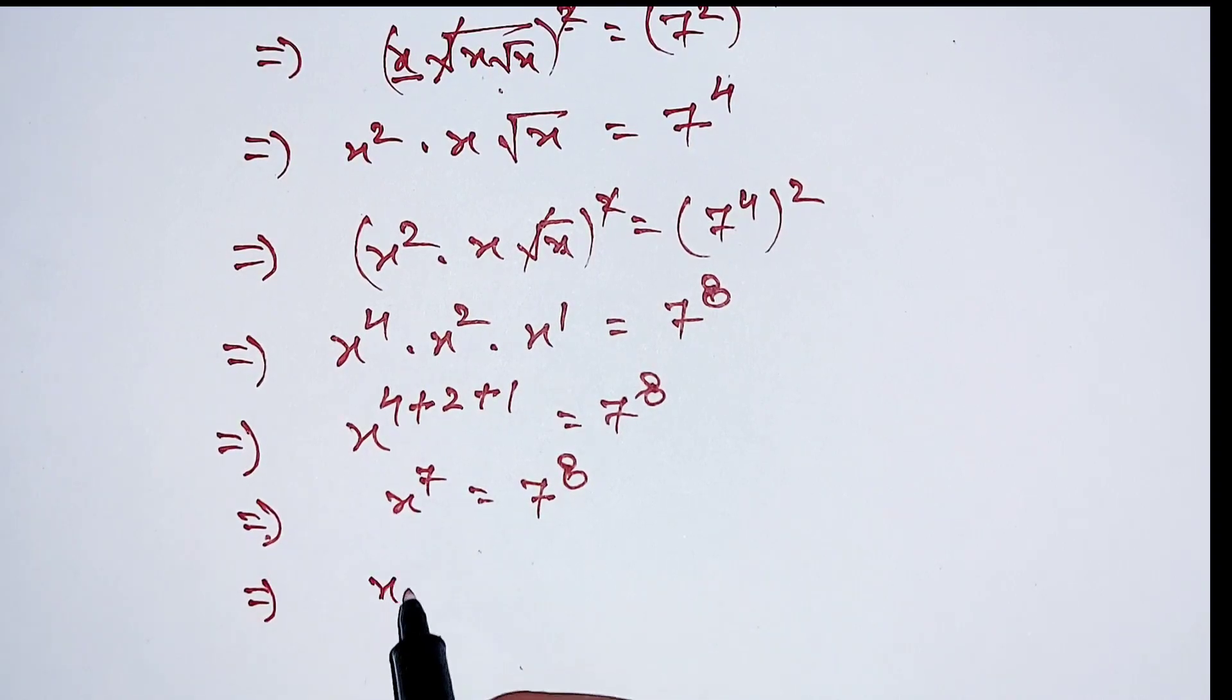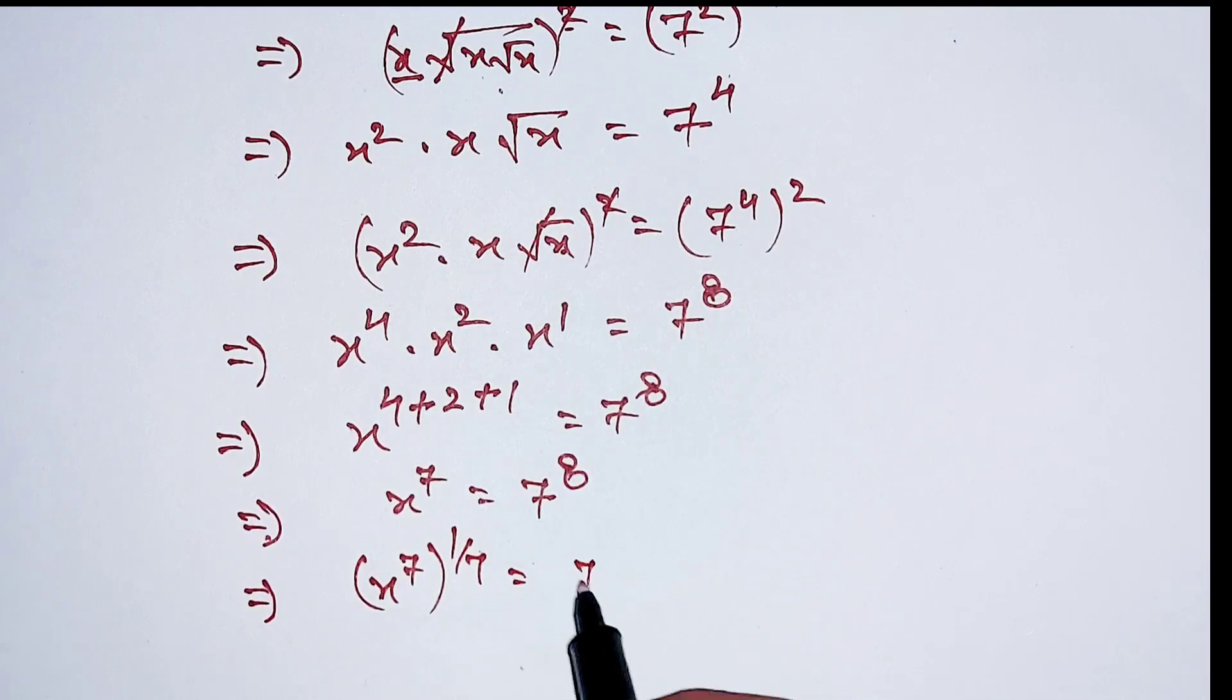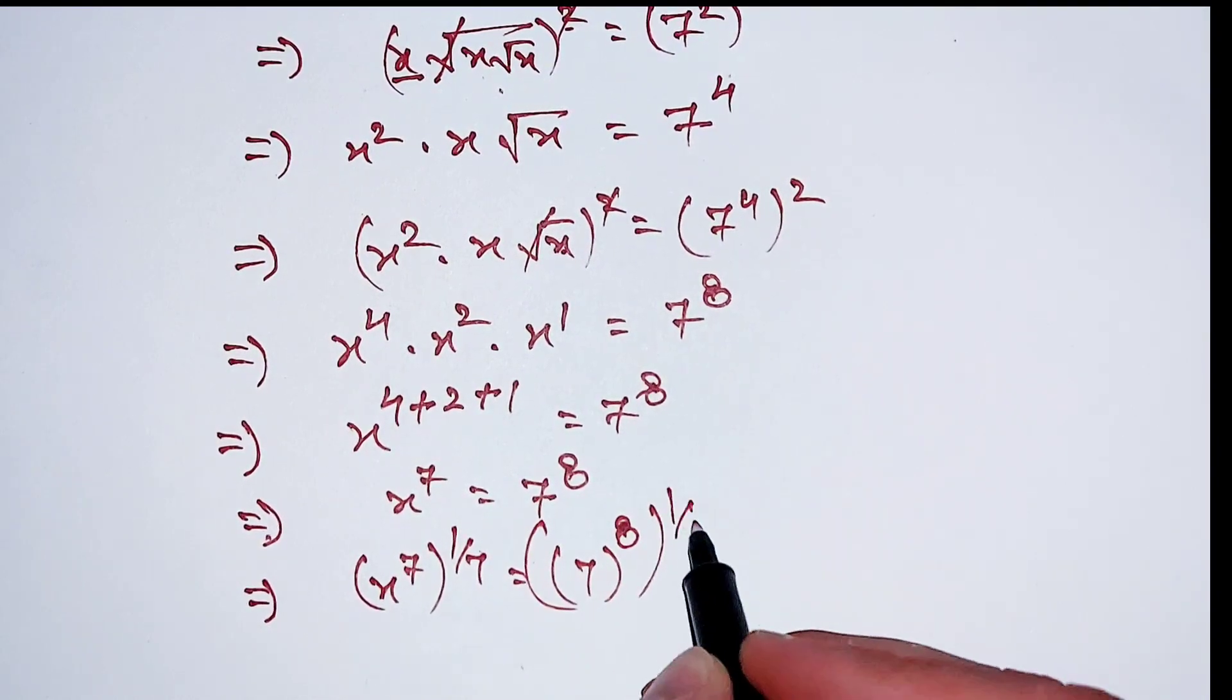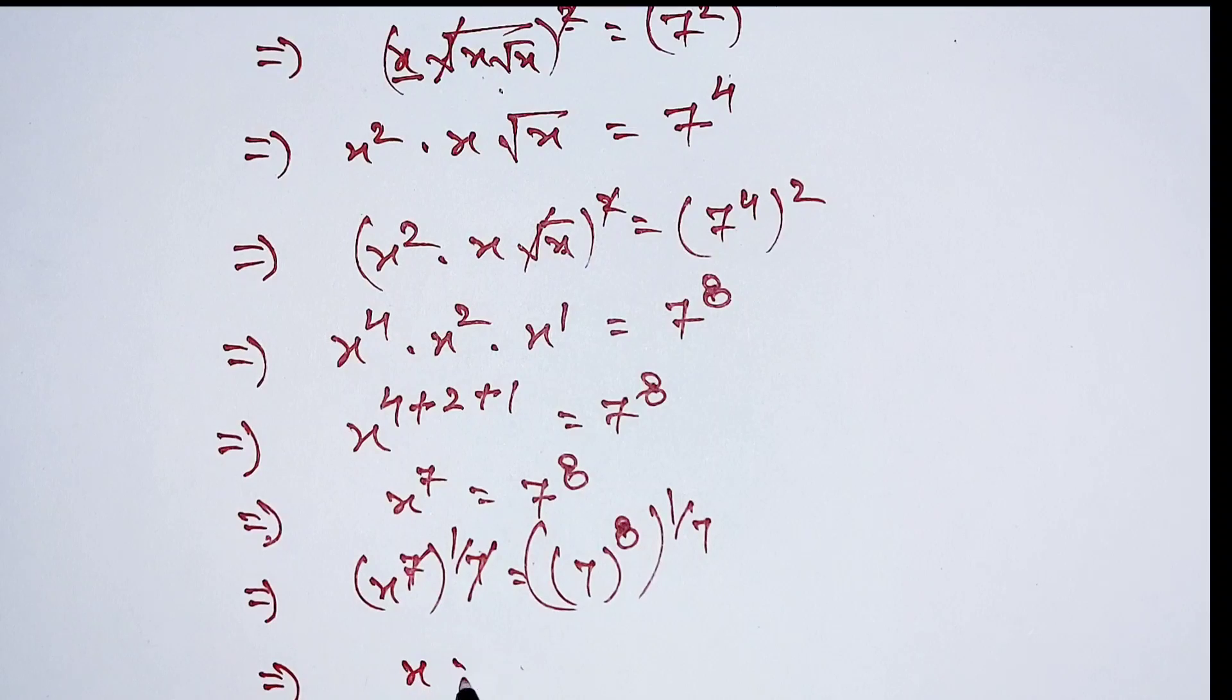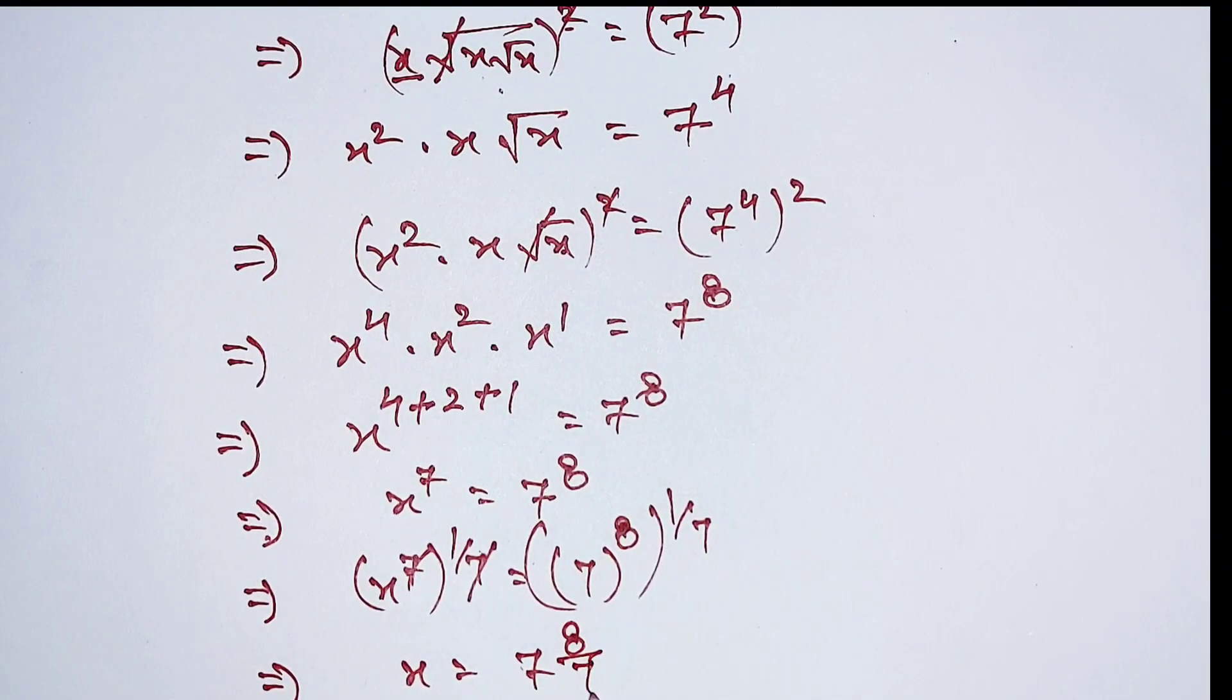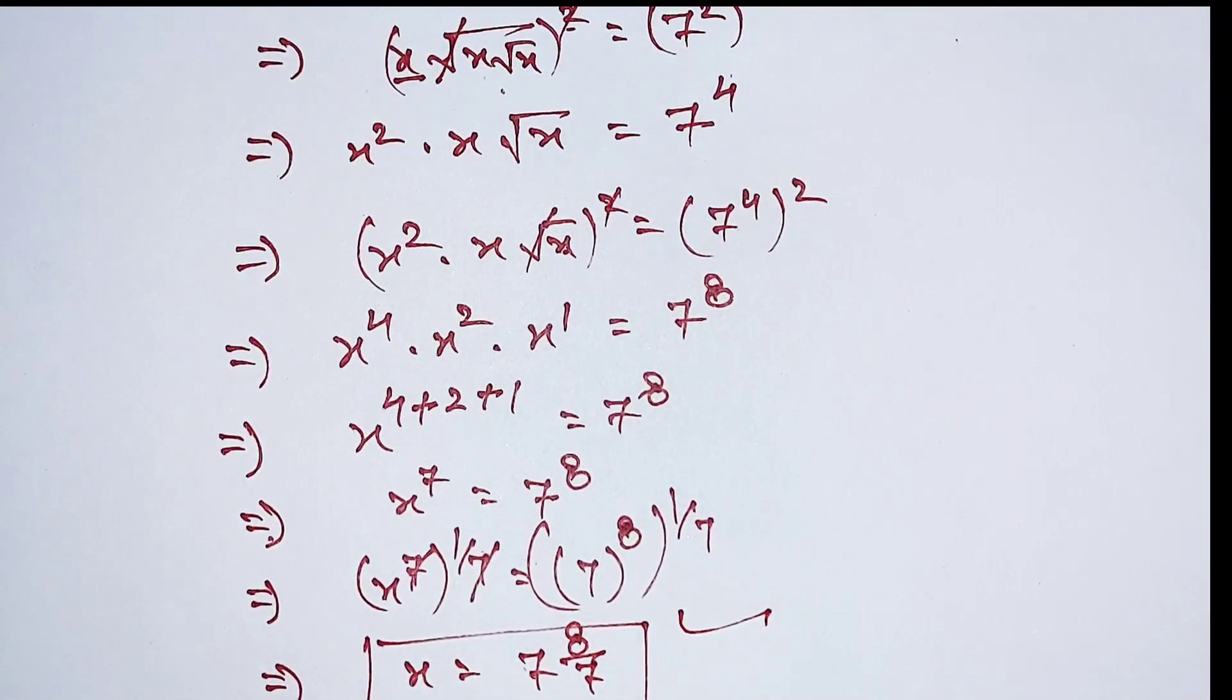Now taking 1 by 7 to the power 5, this 7 will be cancelled out by this. And x is equal to 7 to the power 8 multiplied by 1 by 7, equal to 8 divided by 7. This is our final answer.